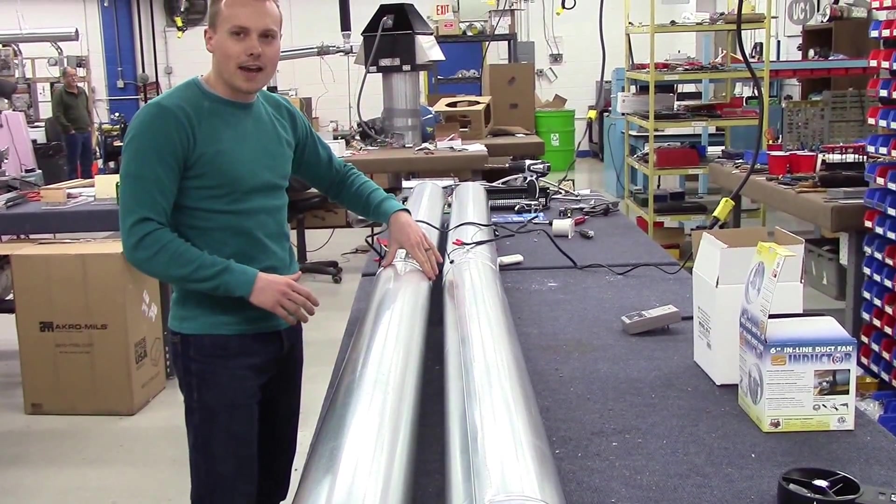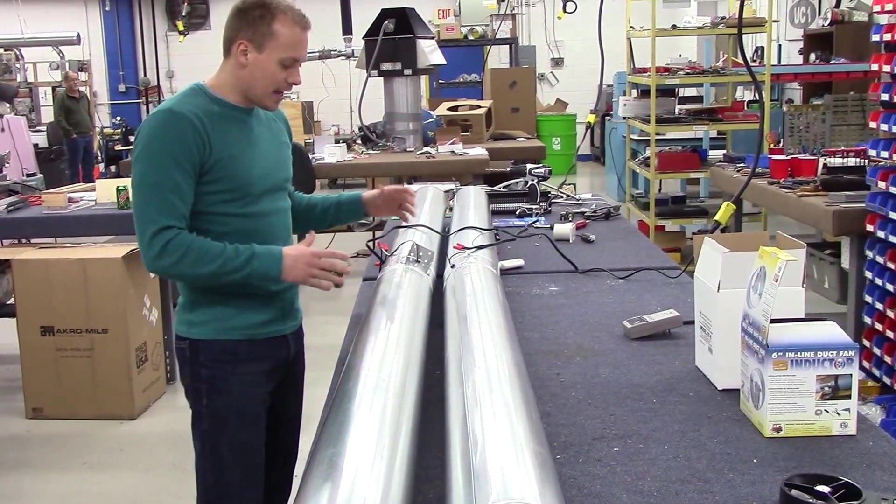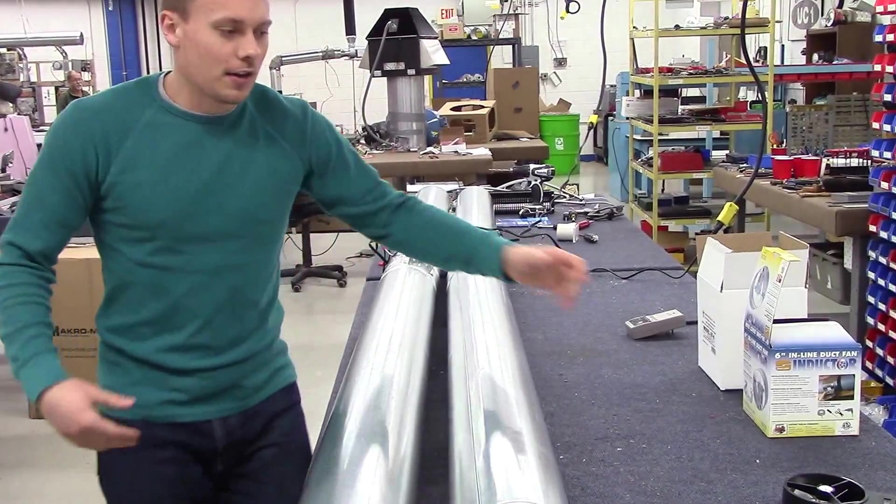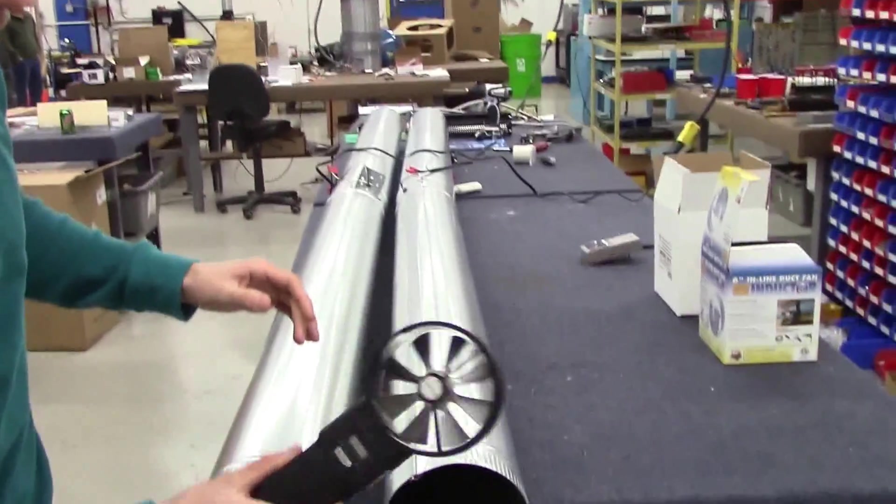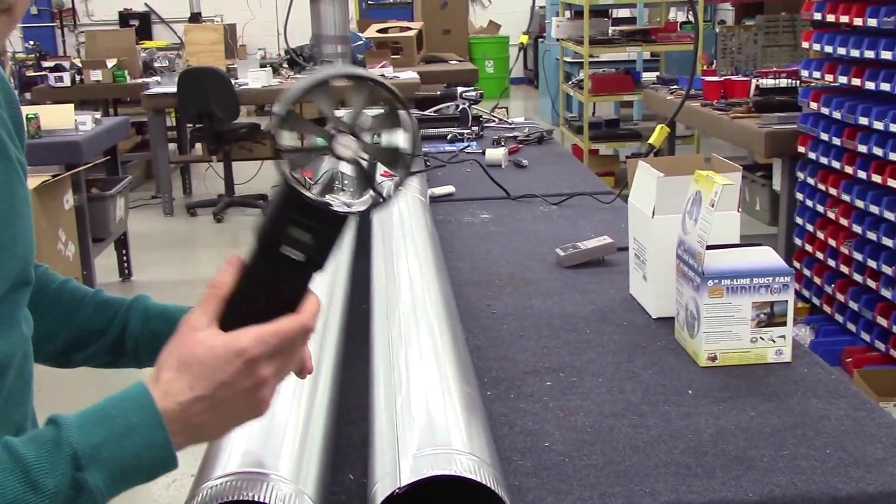The Tjernlund one's a little bit heavier gauge, but other than that, they're very, very similar. So now that they've had a chance to kind of go up to speed, we're going to do two quick comparisons. So this is a volomiter. This is how we measure air speed.